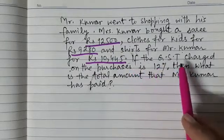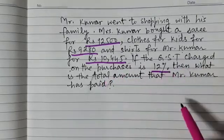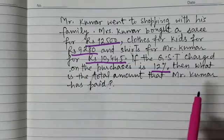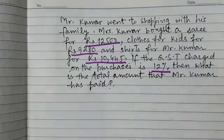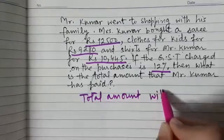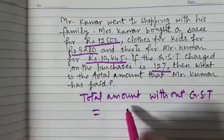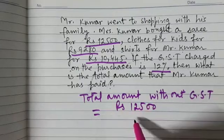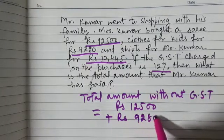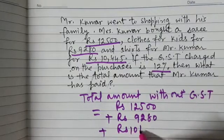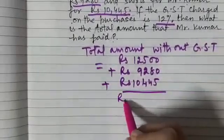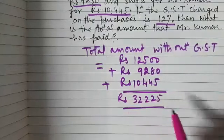It is said that if the GST charged on the purchases is 12%, then what is the total amount paid by Mr. Kumar during the shopping? First, let us find the total amount without GST. That is Rs. 12,500 plus Rs. 9,280 plus Rs. 10,445. When you add them, you get the total amount without GST, which comes out to be Rs. 32,225.